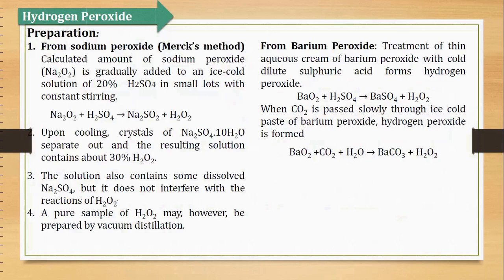Then are the methods of preparation of hydrogen peroxide. Sabse pehla method hai from sodium peroxide. Is method ko bolte hain Marx method. Calculated amount of sodium peroxide is gradually added to an ice cold solution of 20% sulfuric acid with constant stirring. Sodium peroxide ko sulfuric acid mein ek saath nahi add karte, ice cold solution lete hain, aur sodium peroxide ko dheere-dheere in parts add karna hai. In sulfuric acid, hamare paas sodium sulfate and H₂O₂ aa jayega.